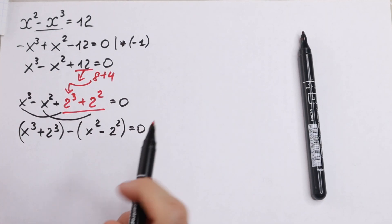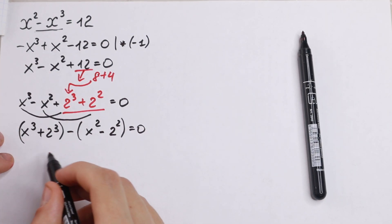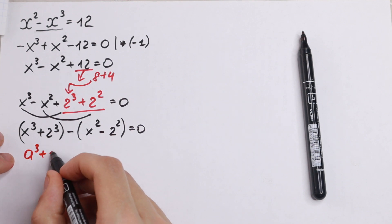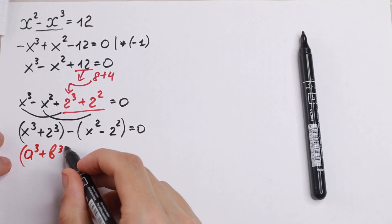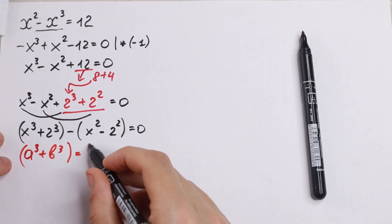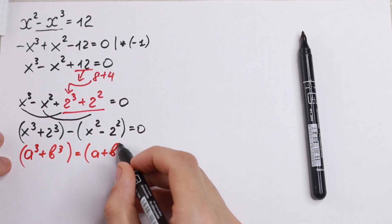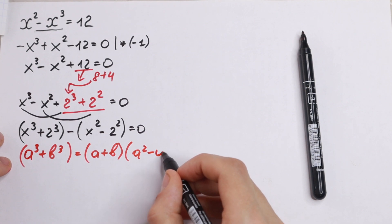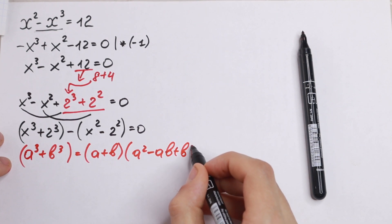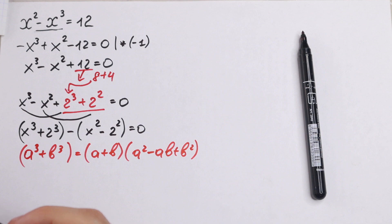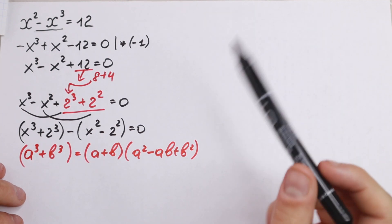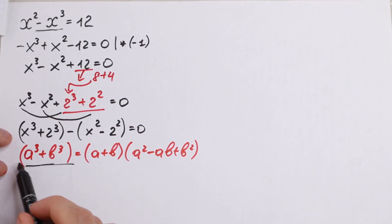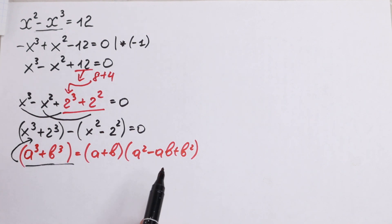We need to know a formula here. As you can see, we have the sum of cubes. The formula is: a cubed plus b cubed equals (a plus b)(a squared minus ab plus b squared). Let's apply this formula to our case because we have the sum of cubes right here.